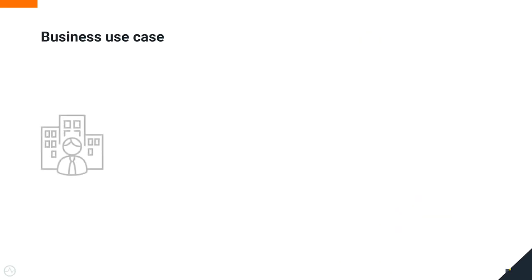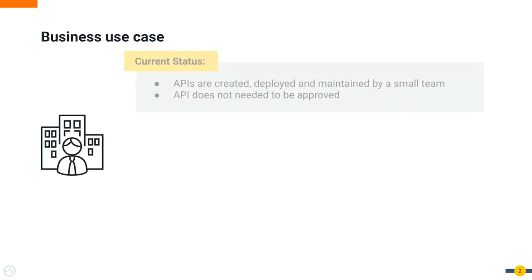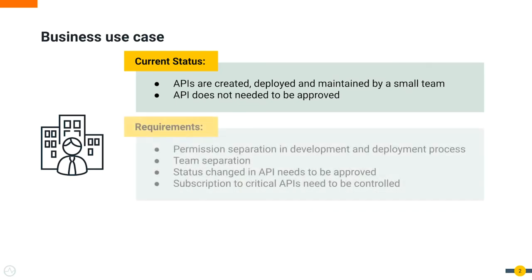The development process is not complex when working with small teams, because there is no need for roles and an approval process very often does not exist at all. The common problem that a company faces when the team is growing is the need to segregate responsibilities — permissions change with roles.